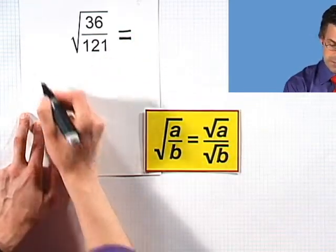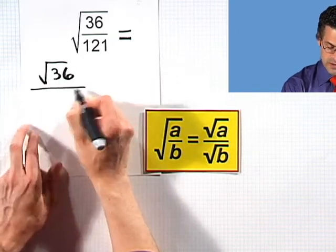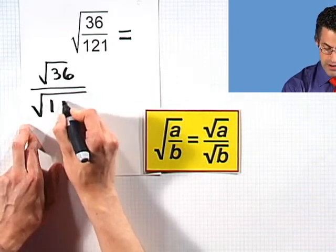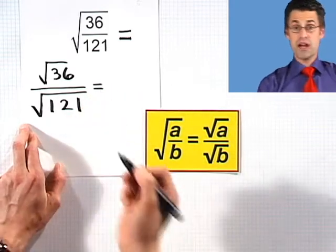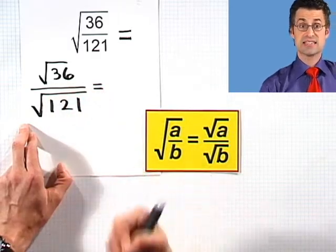So if I take this value here, which looks really threatening to me, I can break it up using this property as square root of the top divided by square root of the bottom. But hey,